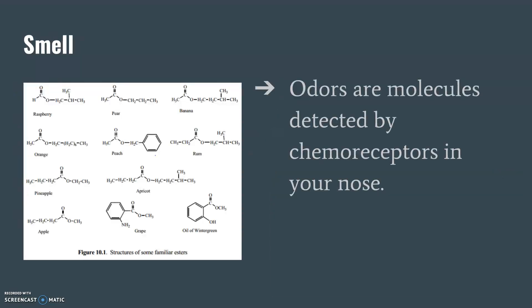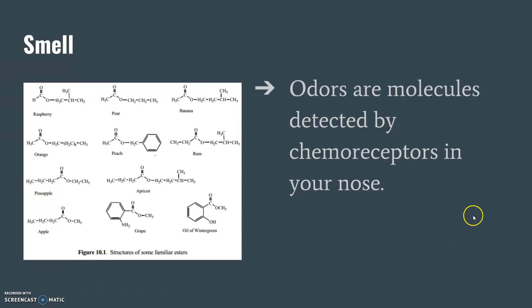Next, let's talk about our sense of smell. Odors are caused by molecules that are detected by the chemoreceptors in our nose. Without the molecules, we would not be able to smell, and then we wouldn't be able to experience all of the wonderful scents in the world. On your screen, you'll see some examples of chemical compounds and the smells they represent. All of these, what are called esters, have this oxygen-carbon-oxygen structure with things bonded to either side. This one is responsible for us smelling raspberry, and there's also peach, grape, and vanilla. These all come into the chemoreceptors inside of our nose and allow us to smell.